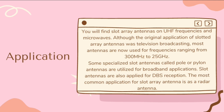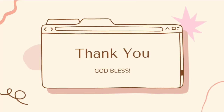Some specialized slot antennas called pole or pylon antennas are utilized for broadband applications. Slot antennas are also applied for DBS reception. The most common application for slot array antennas is as a radar antenna. In some cases, slotted antennas are utilized in cell phone stations where they are fed by an array. That concludes my presentation. Thank you so much and God bless.